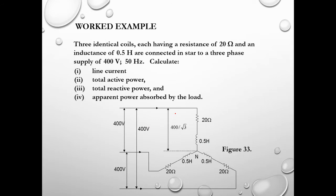Here is a worked example. Three identical coils, each having a resistance of 20 ohms and inductance of 0.5 henry, are connected in star to a 3-phase supply of 400 volts at 50 Hz. Calculate the line current, total reactive power, and apparent power absorbed by the load.